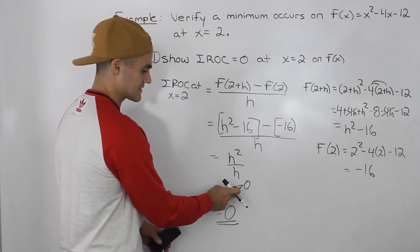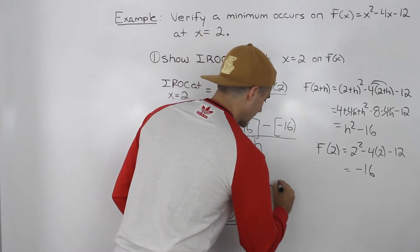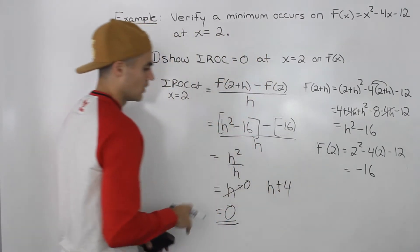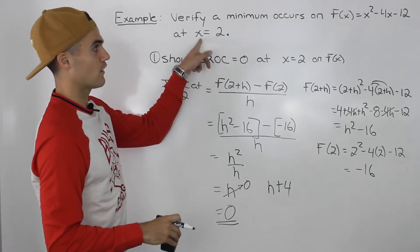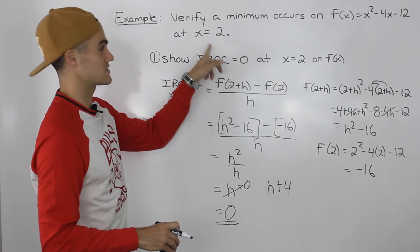If you get to this point and you have some kind of constant around, so let's say instead of just having h here, we ended up having like h + 4, then you know that you did something wrong.